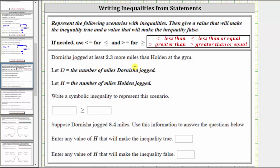Dornisha jogged at least 2.3 more miles than Holden at the gym. Let D equal the number of miles Dornisha jogged. Let H equal the number of miles Holden jogged. Write an inequality to represent this scenario.